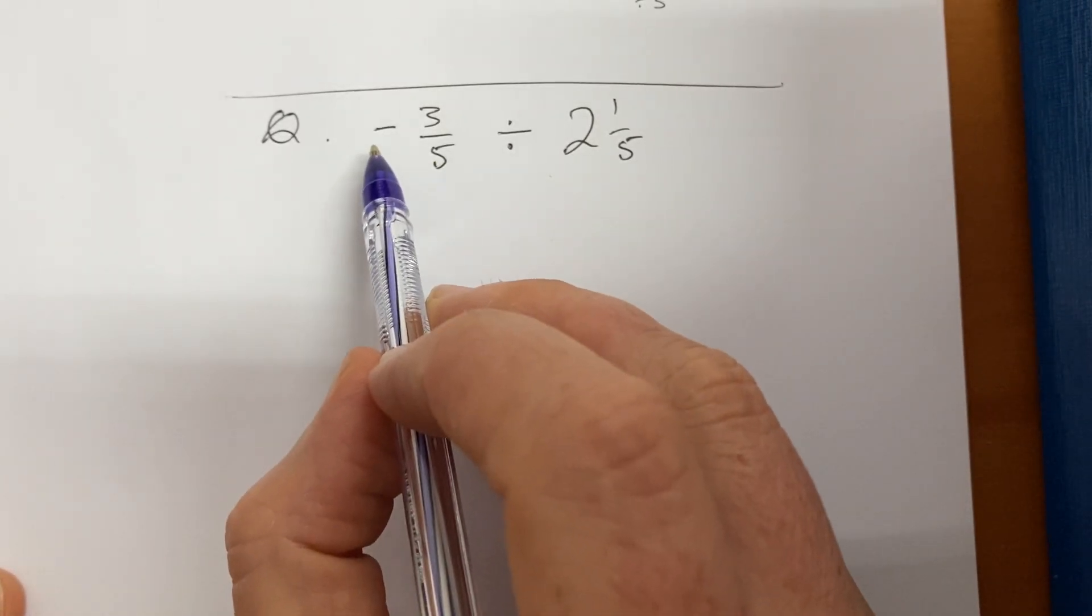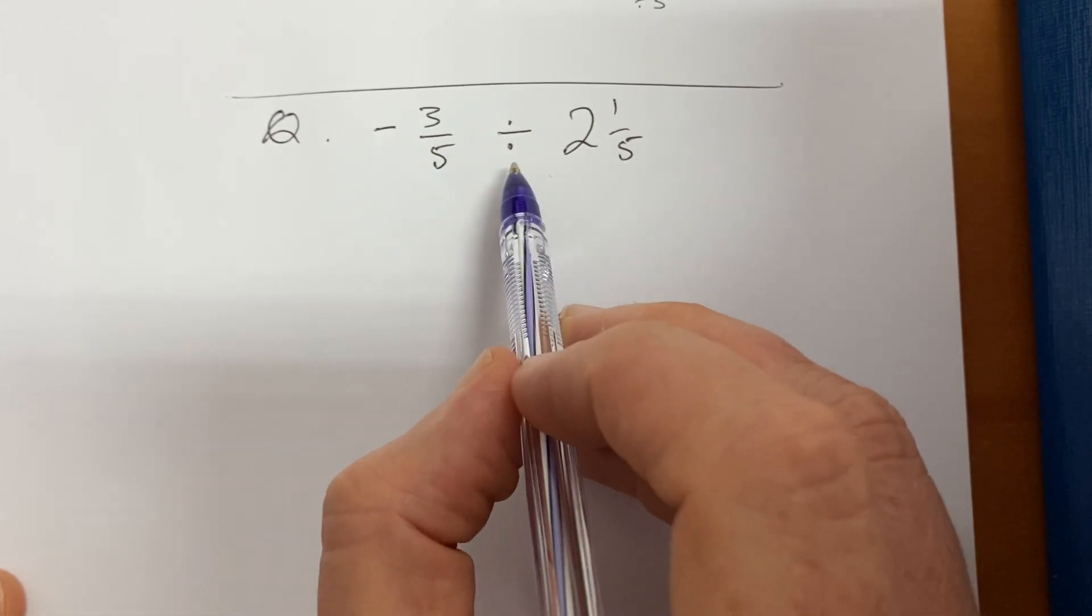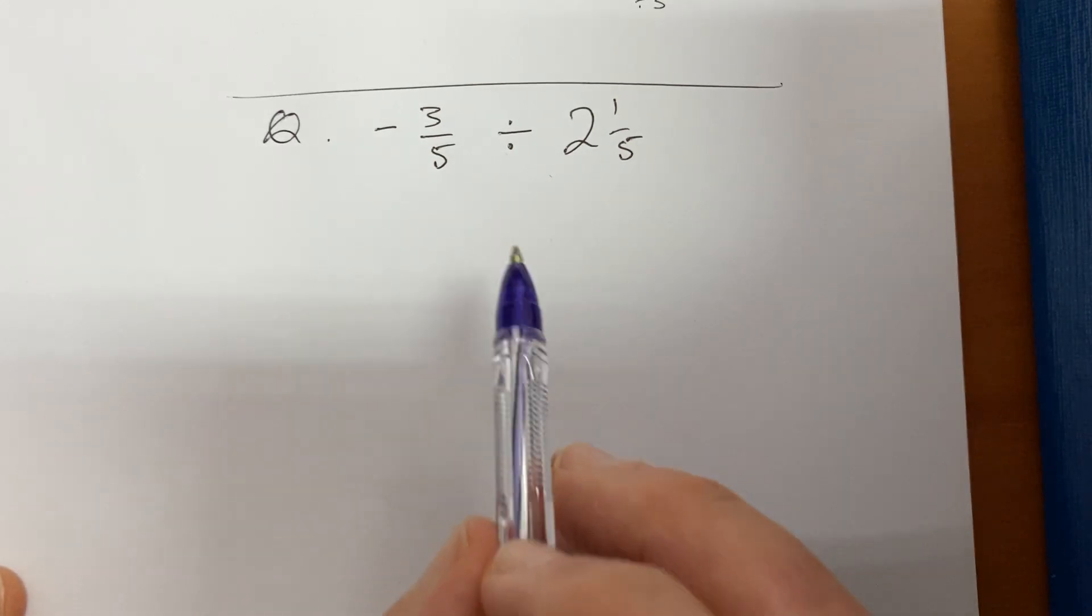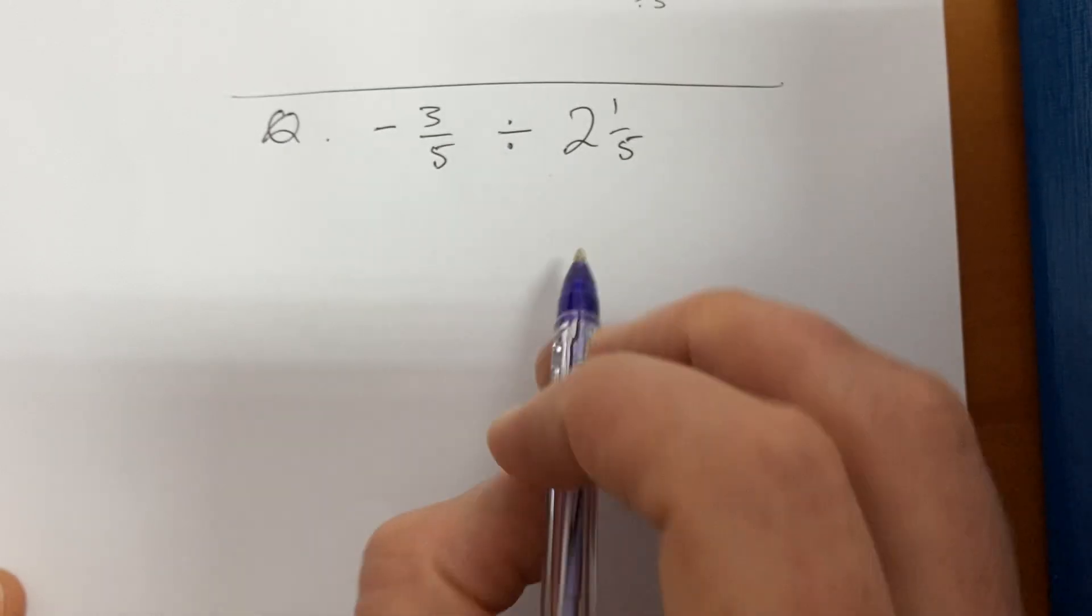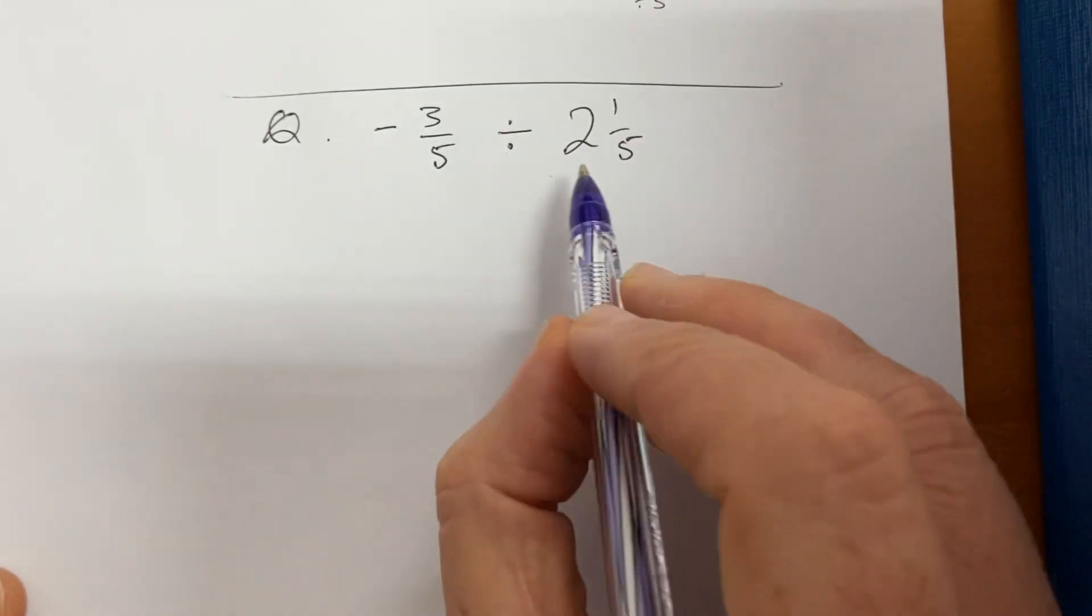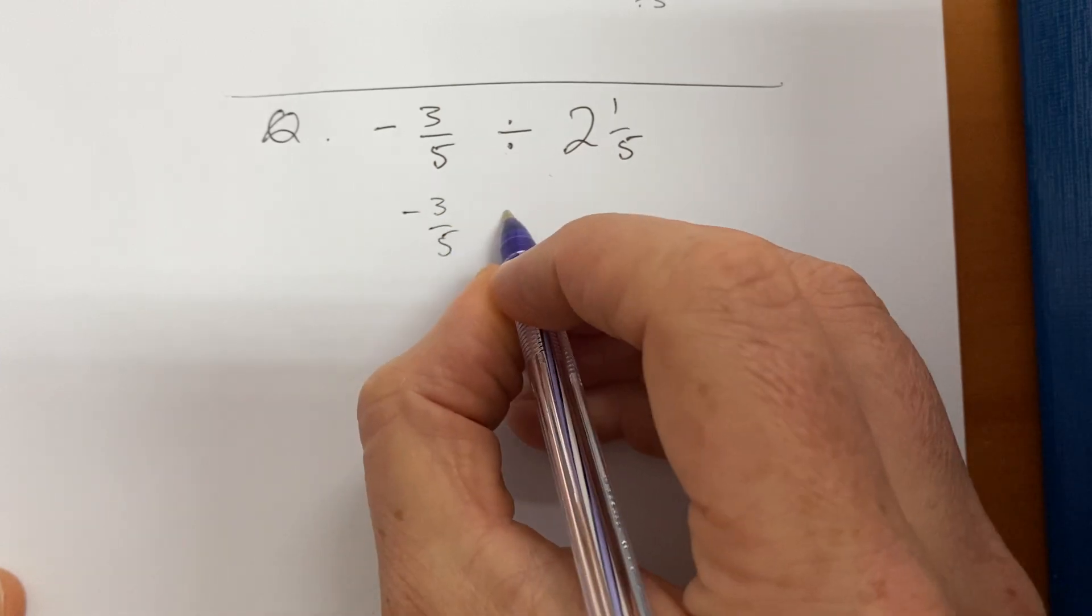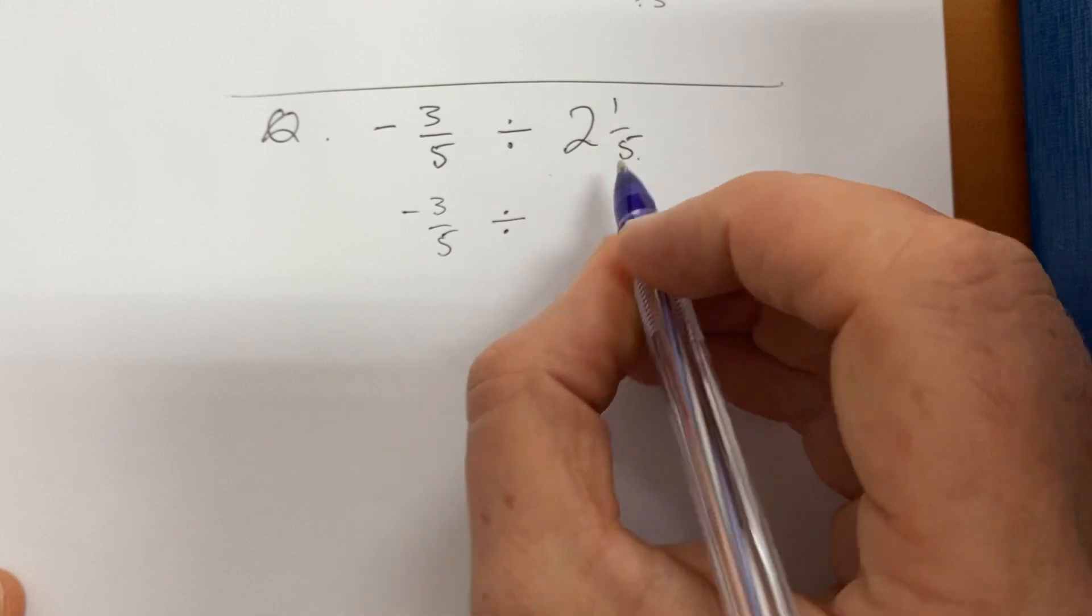Last question. Okay, so I have a negative fraction. Of course, fractions can be negative as well as positive, and I'm dividing by a mixed number. All right, so multiplying or dividing, always change your fractions if they're mixed into improper. So I'll do that first: negative three fifths divided by, and well, two times five is 10, add the one is 11 over five.